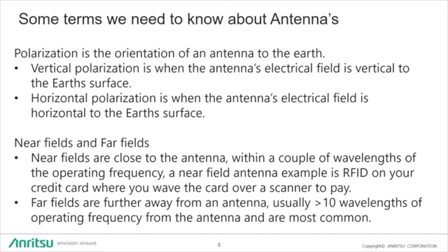We also have near fields and far fields. Near-field antennas are very close — generally a couple of wavelengths of the operating frequency. An example is RFID, when you use your credit card to swipe over a scanner to pay. Far fields are further away, usually at least 10 wavelengths of the operating frequency from the antenna, and those are the most common today.